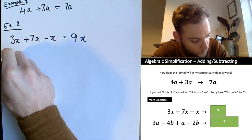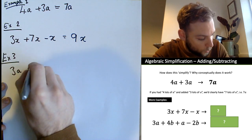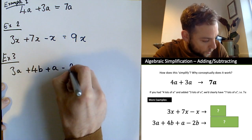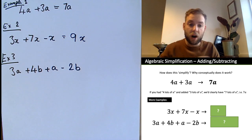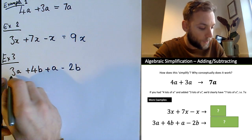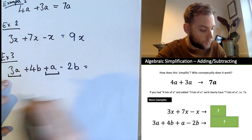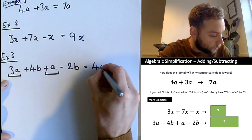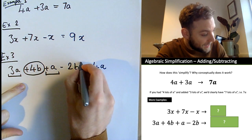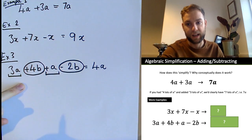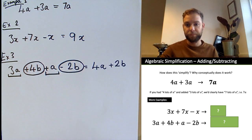Example three: 3a plus 4b plus a minus 2b. Notice we've got a's and b's — they're not the same, so we can't add those together. Three lots of a plus one lot of a equals four lots of a. Then four lots of b take away 2b equals plus 2b. So the answer is 4a plus 2b. It's always the symbol which is in front of the term that matters.